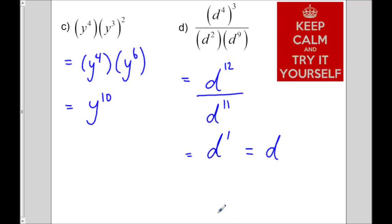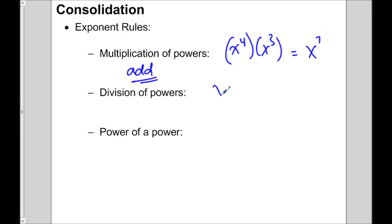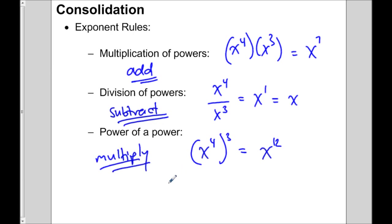The most difficult thing about this topic is knowing when to do what. When powers are multiplying — like x to the 4 times x to the 3 — add the exponents to get x to the 7. When dividing — x to the 4 divided by x to the 3 — subtract to get x to the 1, which is just x. And for a power raised to a power — x to the 4 raised to a 3 — multiply: 4 times 3 is 12. Hopefully this video has made exponent rules clear, as well as how to use them to simplify expressions. Best of luck.